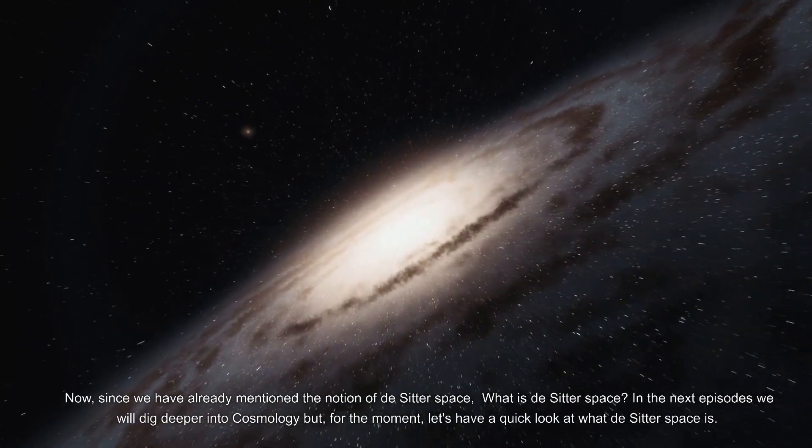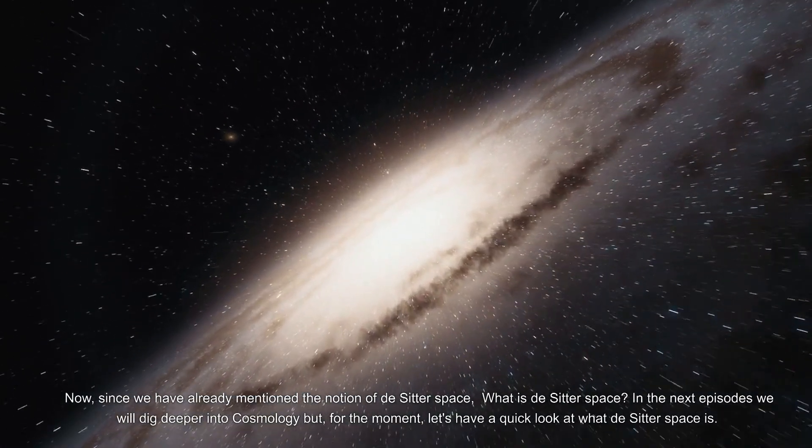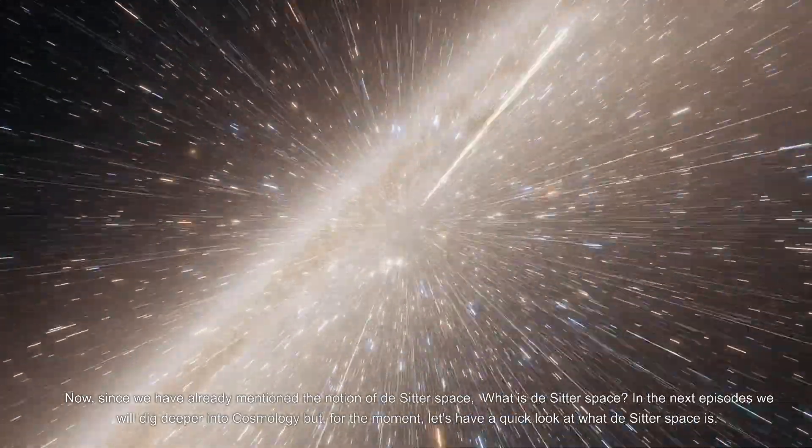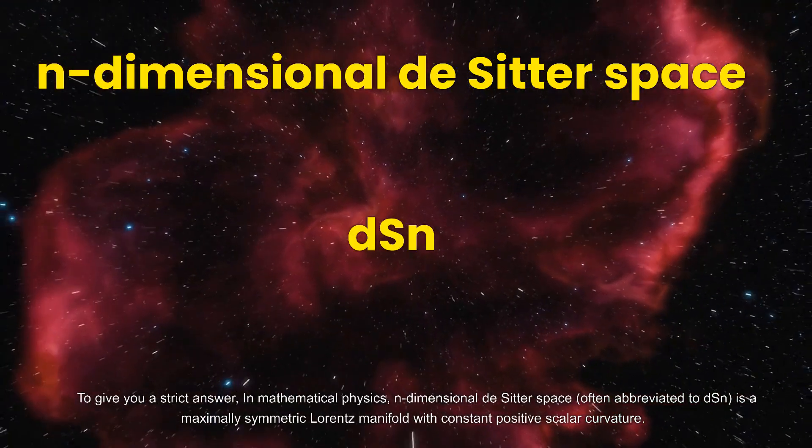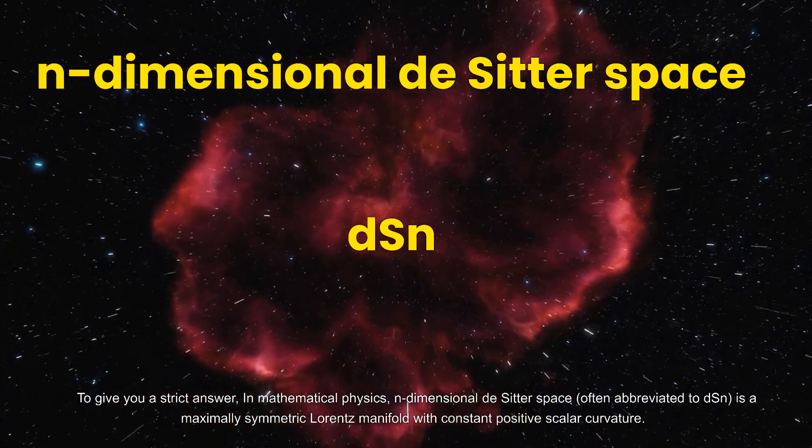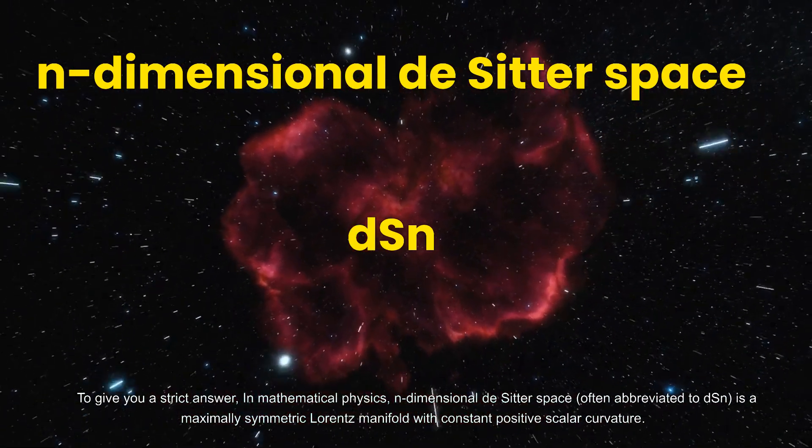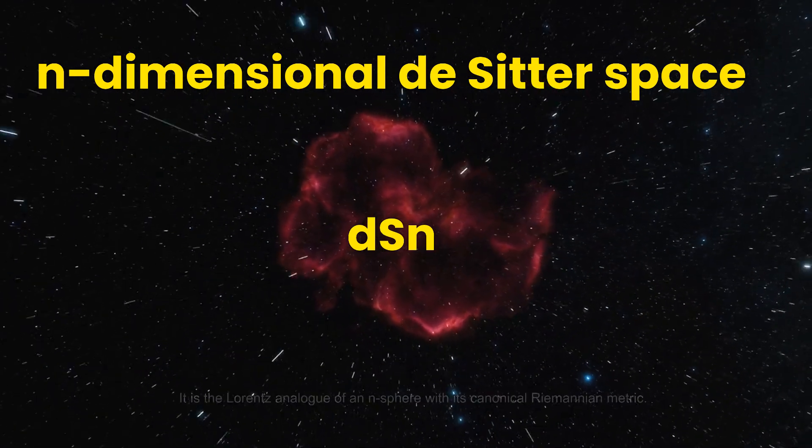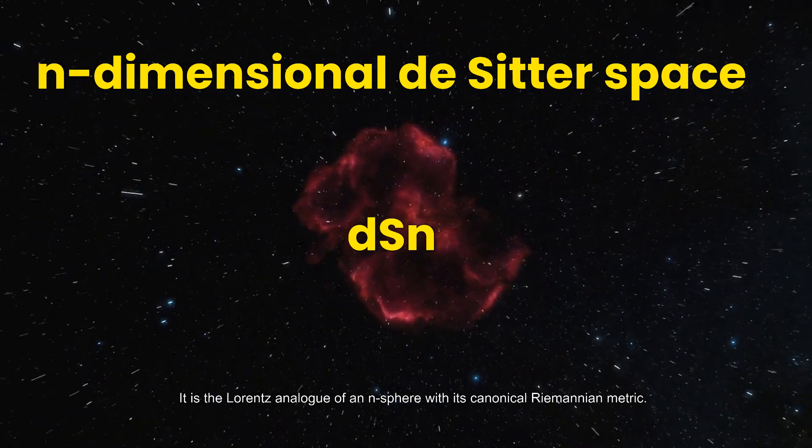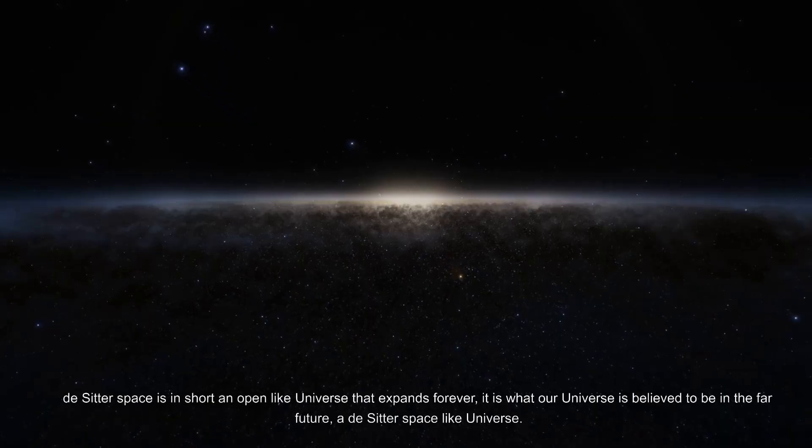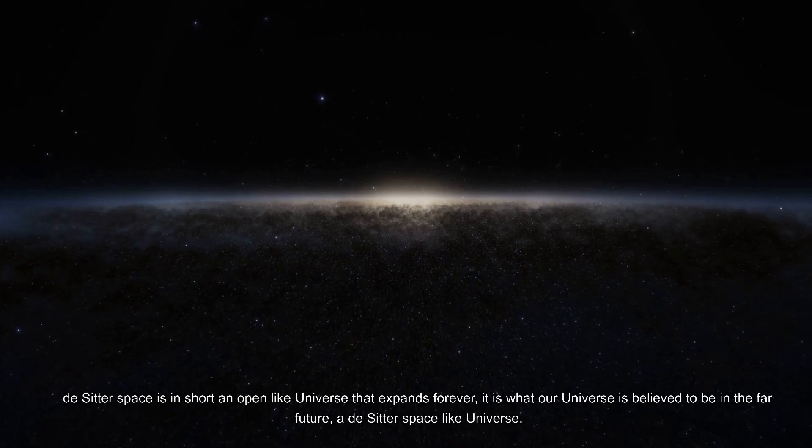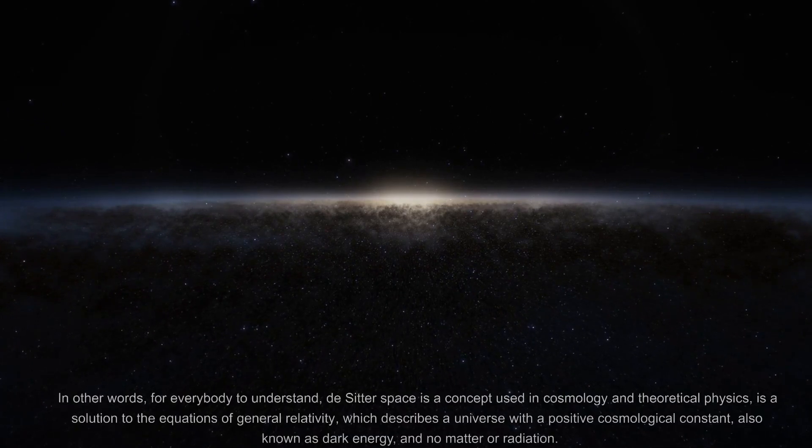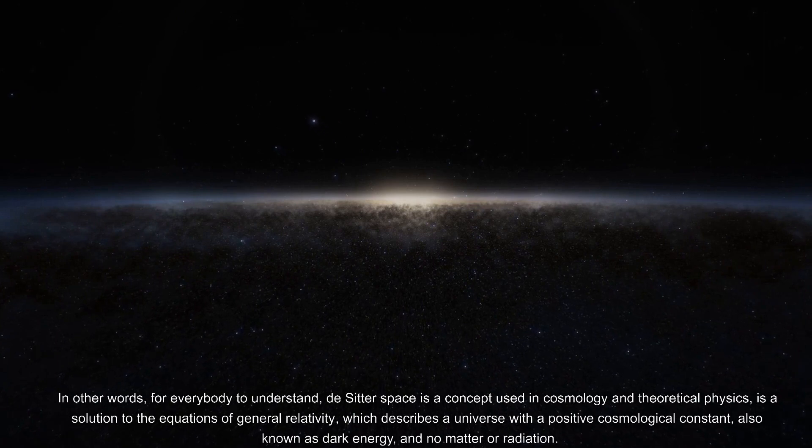Since we have already mentioned the notion of de Sitter space, what is de Sitter space? In the next episodes we will dig deeper into cosmology, but for the moment, let's have a quick look. To give you a strict answer, in mathematical physics, n-dimensional de Sitter space, often abbreviated to dS_n, is a maximally symmetric Lorentzian manifold with constant positive scalar curvature. It is the Lorentzian analog of an n-sphere with its canonical Riemannian metric. De Sitter space is, in short, an open-like universe that expands forever. It is what our universe is believed to be in the far future, a de Sitter space-like universe.